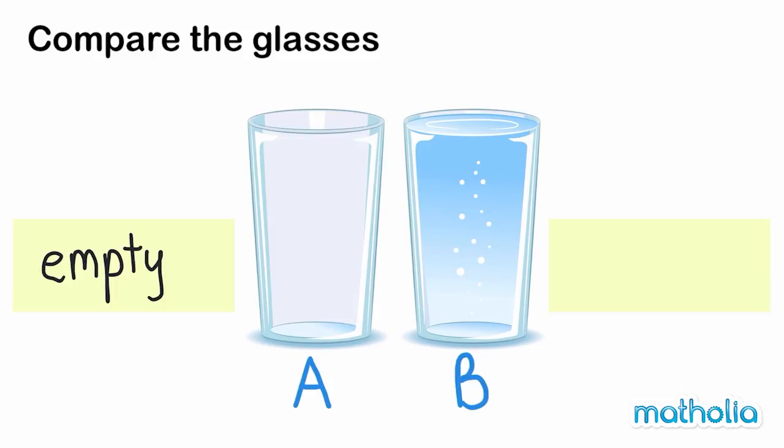Look at glass B. Glass B has water all the way to the top of the glass. Glass B is full. Full.